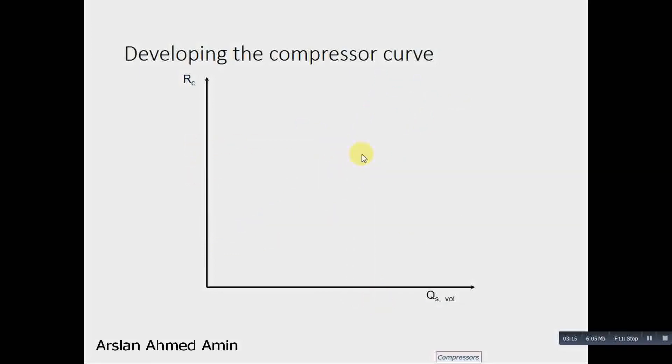So this is a compressor characteristic curve, and curves are shown at various speeds. This is the minimum speed and this is the maximum speed. And this is the surge limit, the minimum flow point. Where we want the flow to the right side of this line. We don't want the flow to cross this line because this will lead to damage.